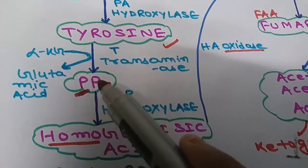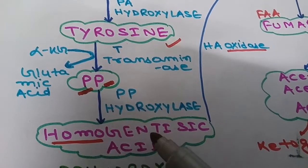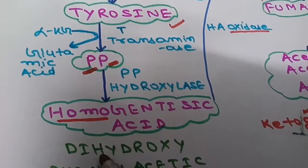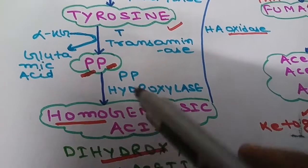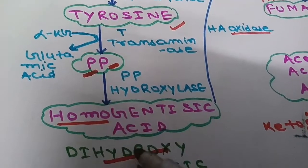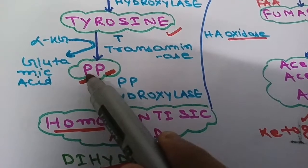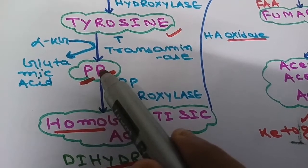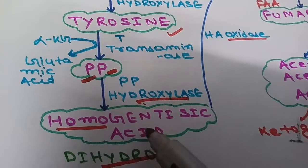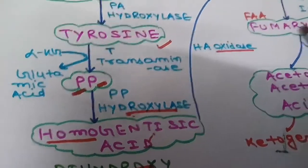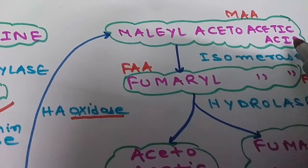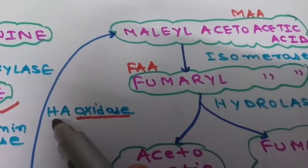In the next step, para-hydroxyphenylpyruvic acid will form homogentisic acid. Homogentisic acid is also known as dihydroxyphenylacetic acid — dihydroxy meaning two OH groups. The enzyme is para-hydroxyphenylpyruvic acid hydroxylase, which converts para-hydroxyphenylpyruvic acid into homogentisic acid.